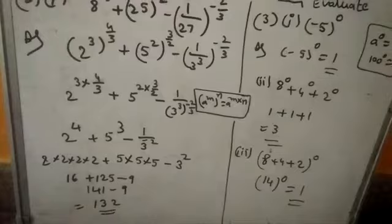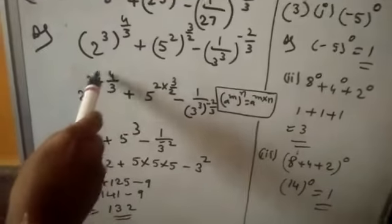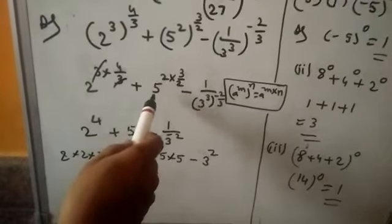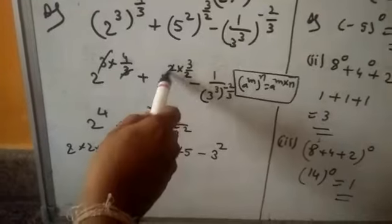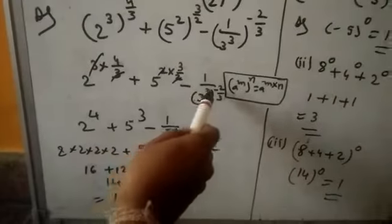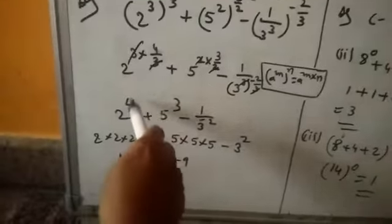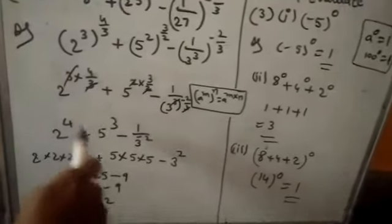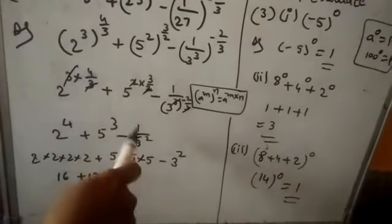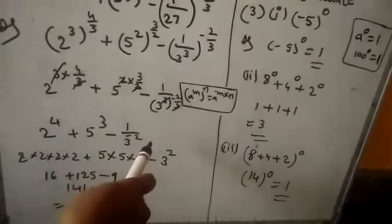Here, 2 to the power of 3 into 4/3 — the 3s cancel. Plus 5 to the power of 2 into 3/2 — the 2s cancel. Here also the 3s cancel. Remaining is: 2 to the power of 4, plus 5 to the power of 3, minus (1/3) to the power of -2.